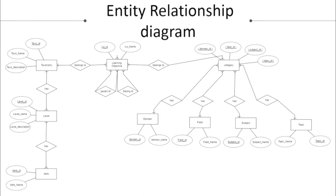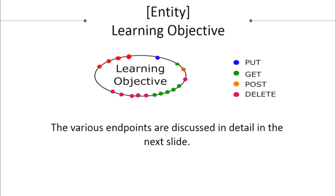This is the detailed ER diagram. The main entity is Learning Objective, which has two attributes: learning objective ID and learning objective name. A learning objective is related to taxonomy — one taxonomy can have many learning objectives. Taxonomy is related to level, and level is related to verb. A learning objective also needs to be maintained in a hierarchical structure: domain, field, subject, and topic, forming a complete structure stored in a category. Additionally, one learning objective can be a child, parent, or sibling to another learning objective.